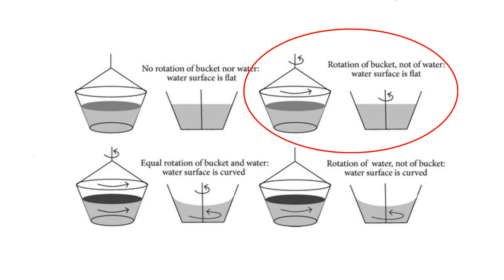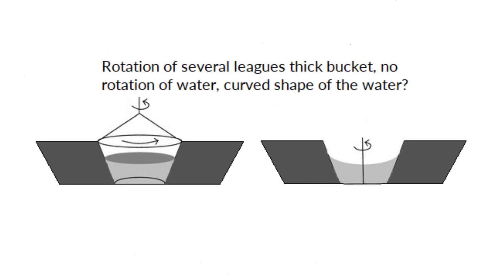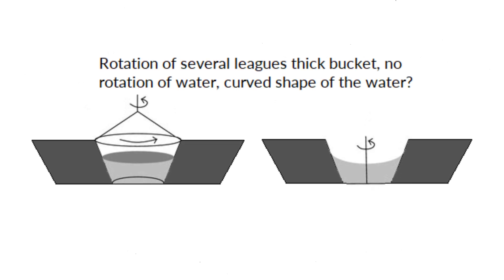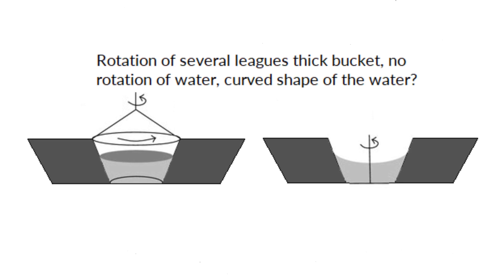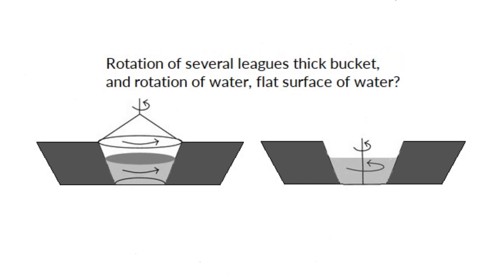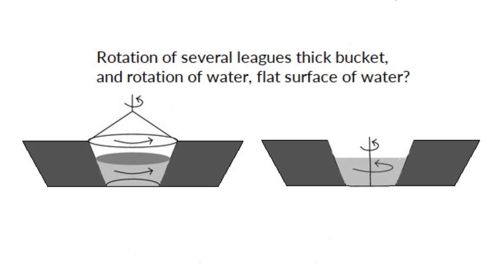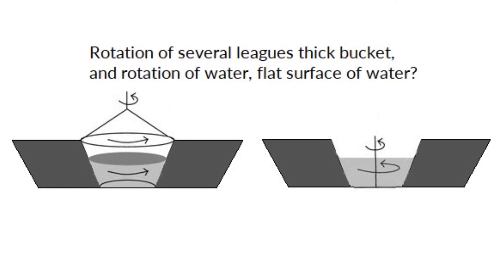According to Mach, the relative rotation of the water with respect to the bucket produces no noticeable centrifugal forces, and such forces are instead produced by its relative rotation with respect to Earth and the other celestial bodies. In this way, the relative motion between the several leagues thick bucket and the water could produce noticeable centrifugal forces in the water, and perhaps their non-relative motion could reduce these forces when both rotate with respect to the rest of the universe.